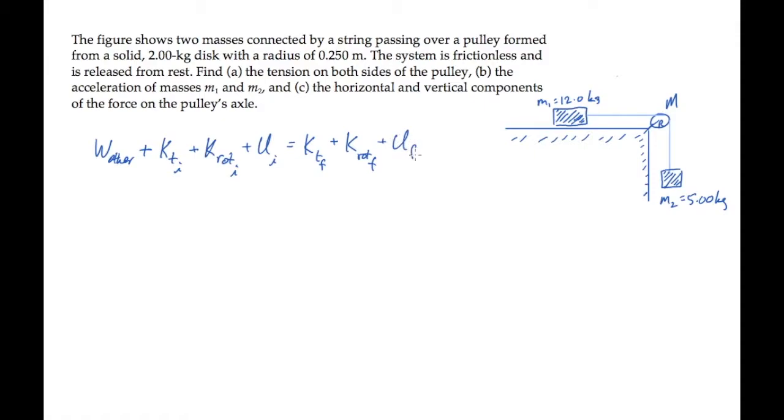Choose as the initial state the state shown here, where everything is at rest. So there's no translational kinetic energy, there's no rotational kinetic energy. And if we identify this level as y equals zero, there's no gravitational potential either, ignoring mass 1 because it only moves sideways.